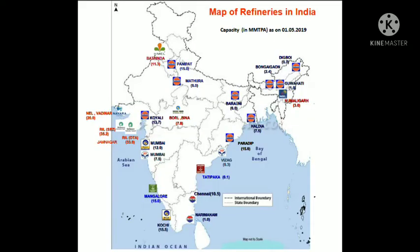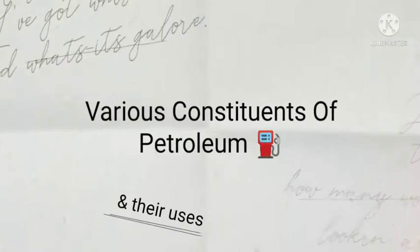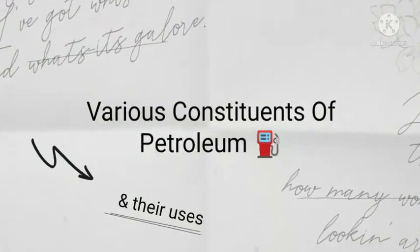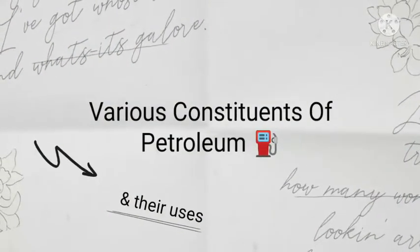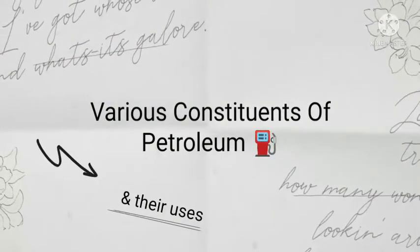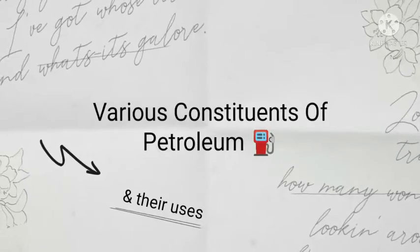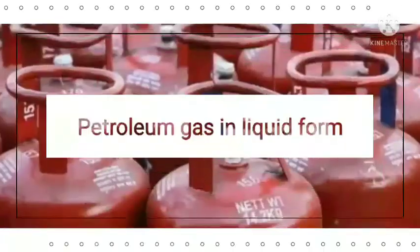The process of separating various components or useful fractions of petroleum is called refining of petroleum. Petroleum refineries in India are located at Madras, Cochin, Mathura, Digboi, Mumbai, etc.